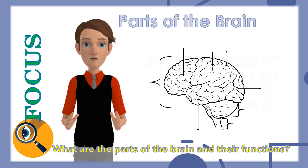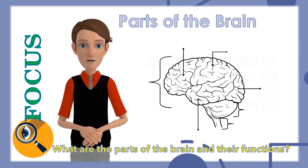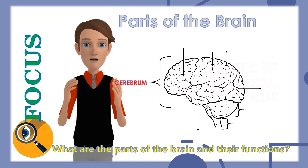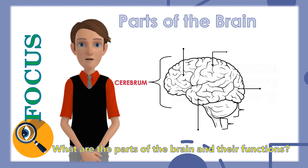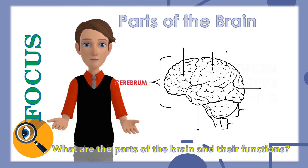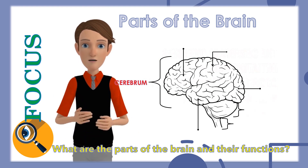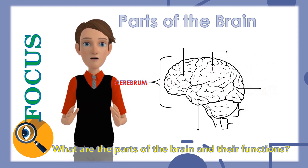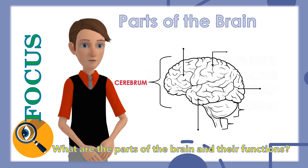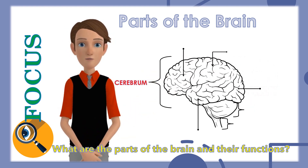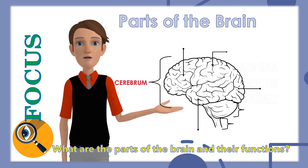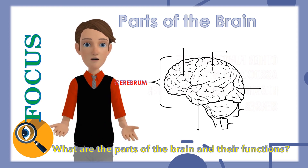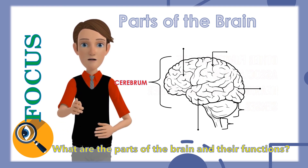The cerebrum, cerebellum, and brain stem are the three major sections of the brain. The cerebrum is the largest, accounting for approximately 85% of the brain's weight. The cerebrum oversees initiating and coordinating movement, as well as regulating temperature. Other parts of the cerebrum are responsible for speech, judgment, thinking and reasoning, problem solving, emotions, and learning. Other functions are associated with vision, hearing, touch, and other senses.